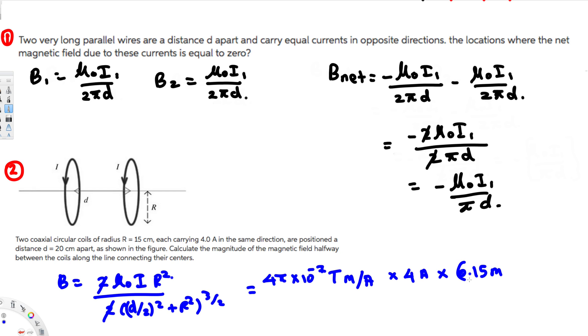We have the radius that is 15 centimeters, which is equal to 0.15 meters. So 0.15 meter squared. In the denominator, we are going to have (d/2)². d is given as 20 centimeters, so d/2 is going to be 10 centimeters, which equals 0.1 meters. So 0.1² plus radius squared—that is 0.15².